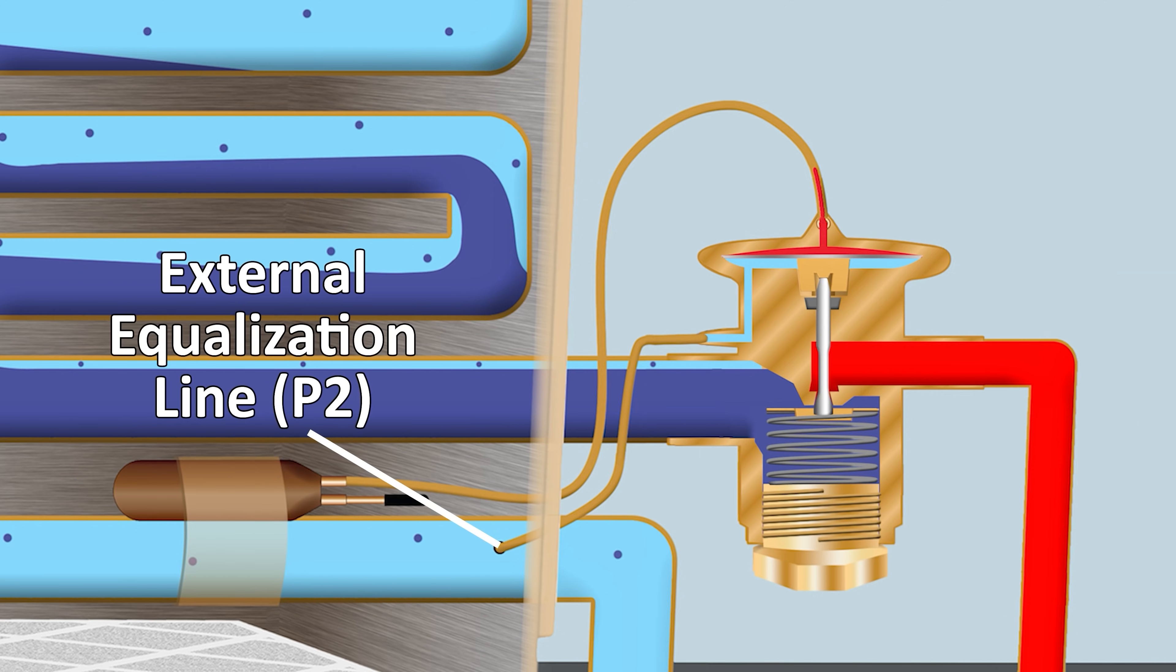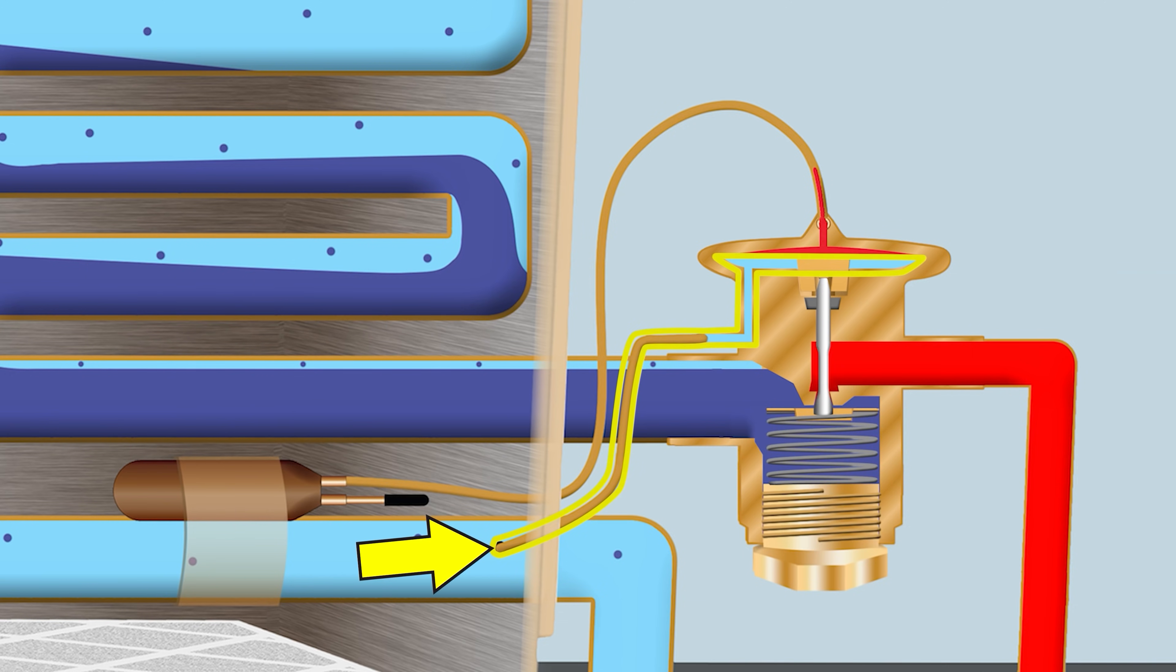Now P2, that is a closing force, and that is the external equalization line, such as this one right here where you have the line tapped into the vapor tube downstream of this bulb. You can also have an internal equalization line, and that would just get connected right over here to the outlet of the TXV.